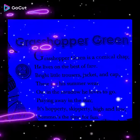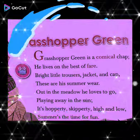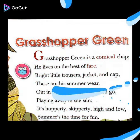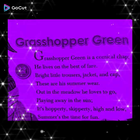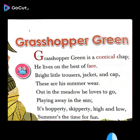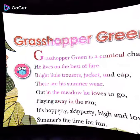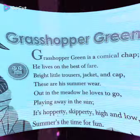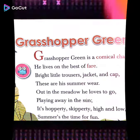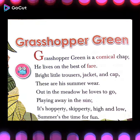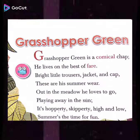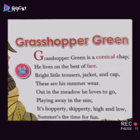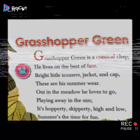The grasshopper loves to go out in the meadow and play in the sunshine. Meadow means grassy land. He hops along in a series of small quick hopping movements that make him jump high and low — hopperty and skippity movements. Summer is the time when the grasshopper enjoys and has fun.